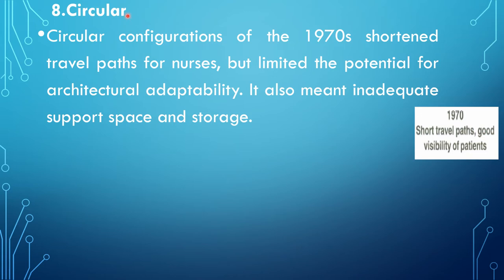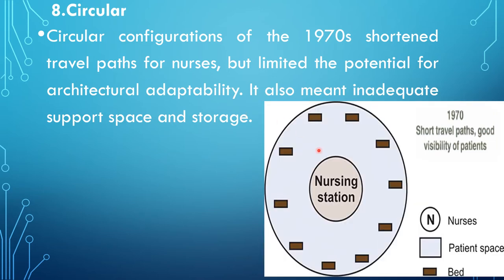The eighth type is the circular unit, designed in the 1970s. It shortened the travel path for nurses and offered good visibility of patients, but had inadequate support space and storage and limited potential for architectural adaptability. The nurse's station and support services are at the center, with patient beds arranged at the periphery of the circle.